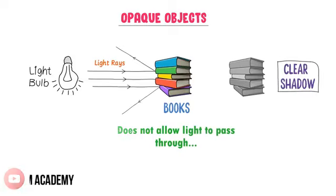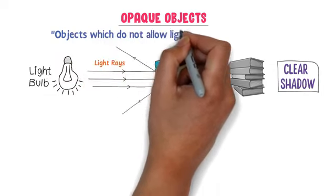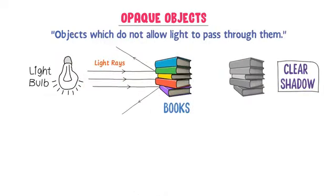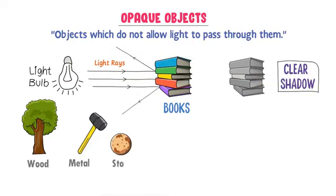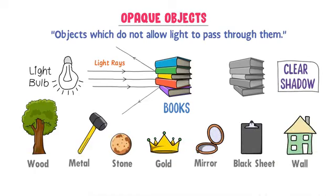Therefore, we define opaque objects as objects that do not allow light to pass through them. For example: wood, metals, stones, gold, mirror, black sheet of paper, wall, etc. are all opaque objects. It is because they do not allow light to pass through them and they form a clear shadow.